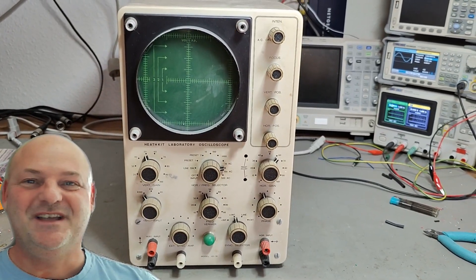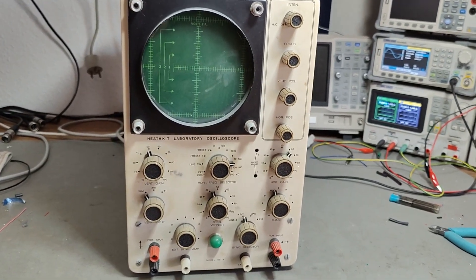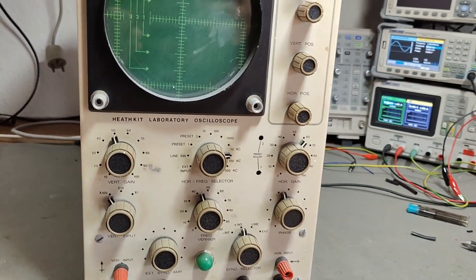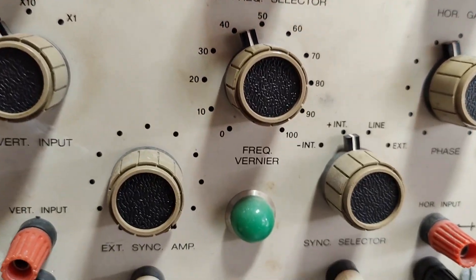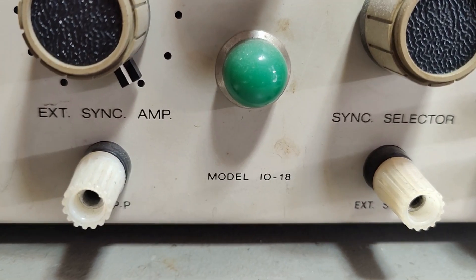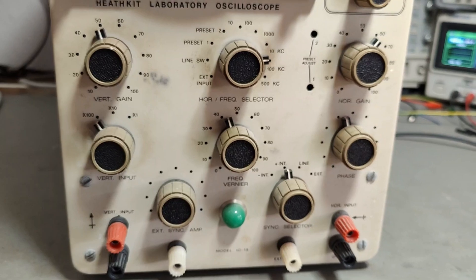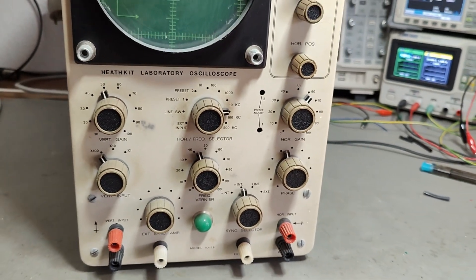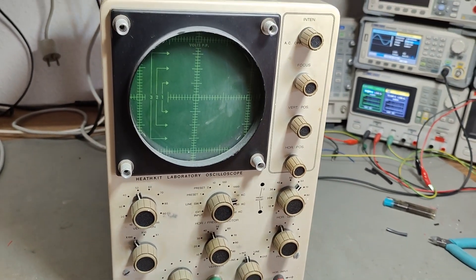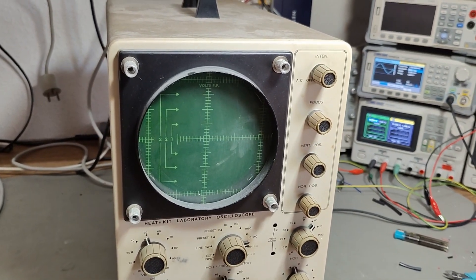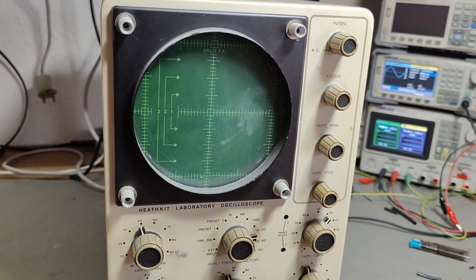Welcome to a new test and teardown video. This time it's a Heathkit laboratory oscilloscope, model IO-18. This is an all tube-based oscilloscope from 1973.